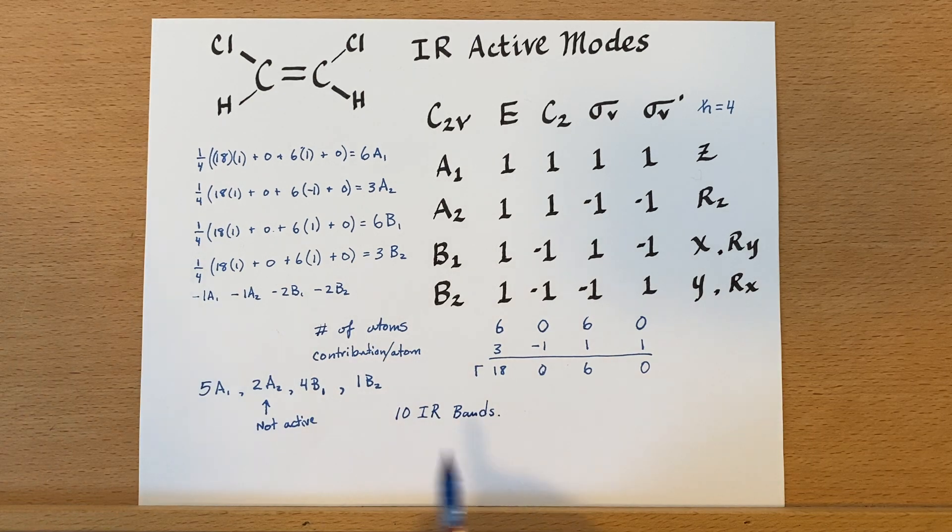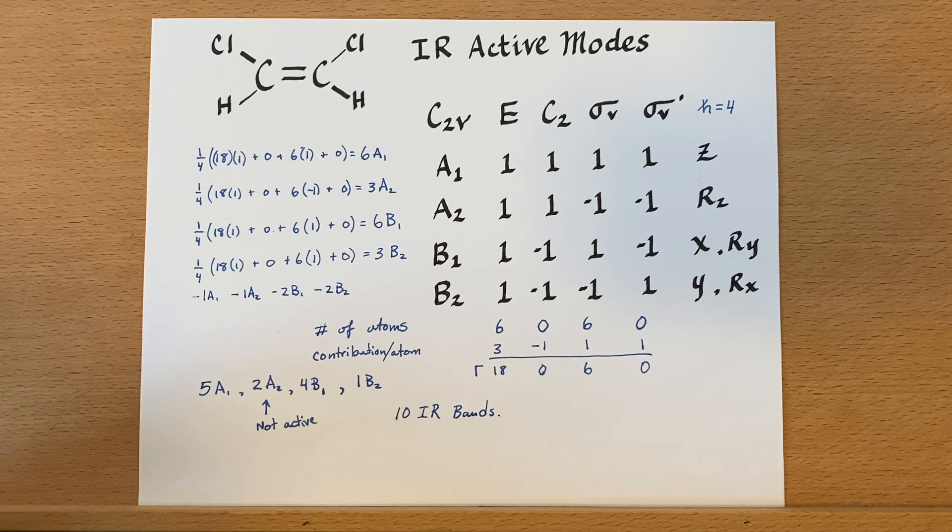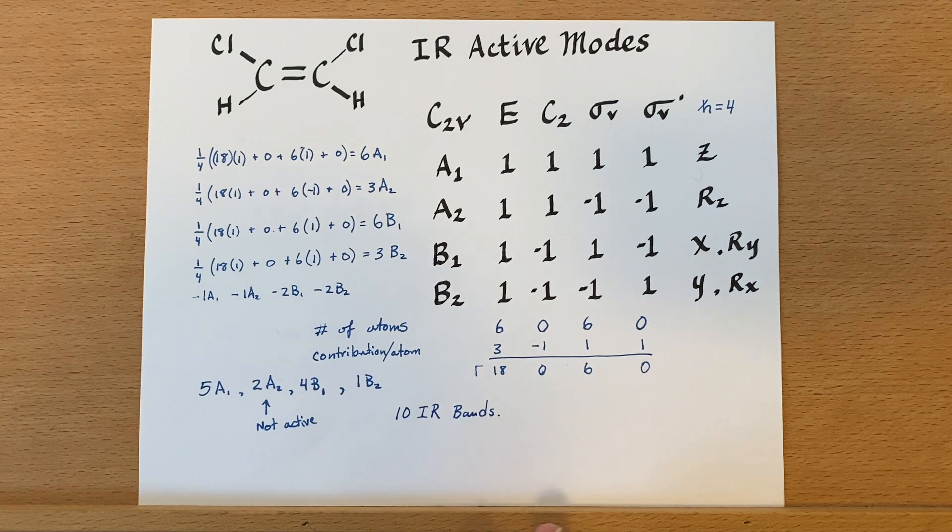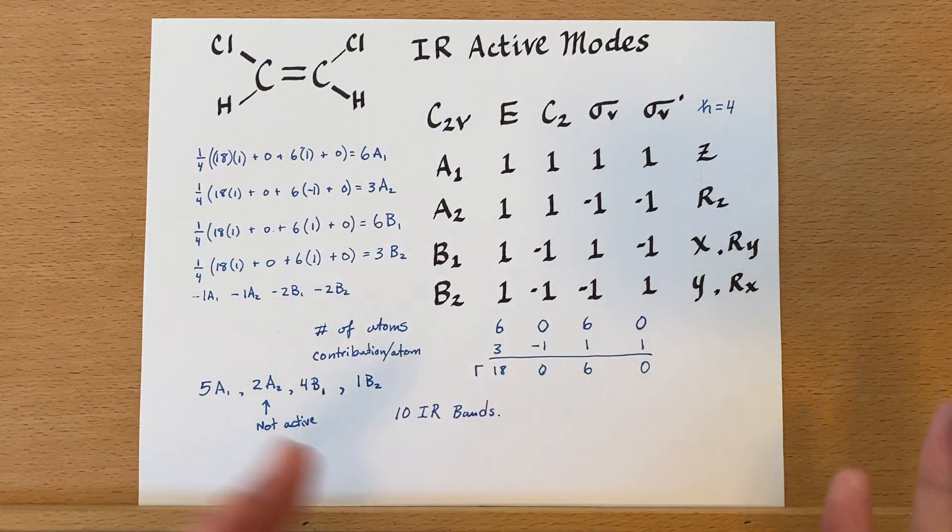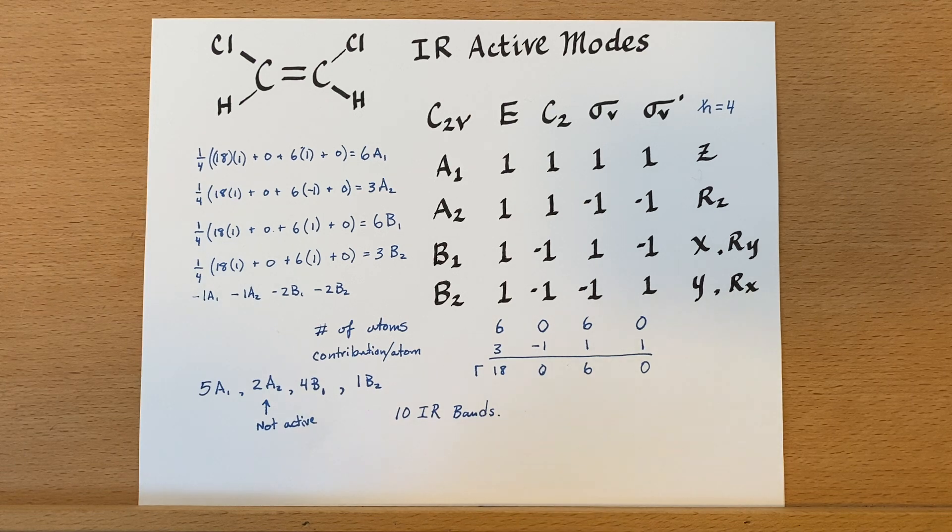Now, in our other video, when we looked at the trans version of this, the trans isomer, you may recall that it only had six IR active bands. And this is one of the things that group theory can help us with. We can identify whether it would have a fewer number of IR active bands or a greater number. And that can help us identify what molecule we're looking at based on just the number of bands that we see.